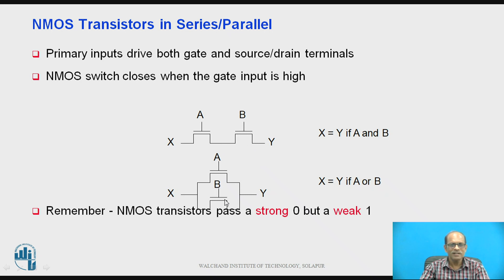Similarly in the second diagram two NMOS are connected in parallel. So X is equal to Y if A or B, means if A equal to 1 or B equal to 1. So for the NMOS it passes a strong 0 but weak 1. So it is not able to pass the strong one.